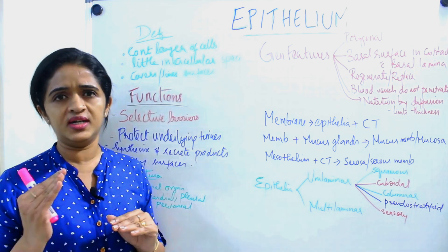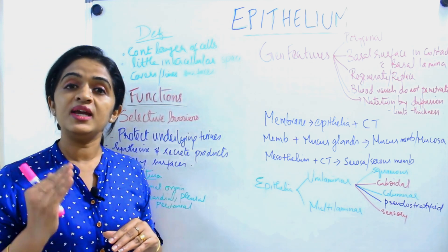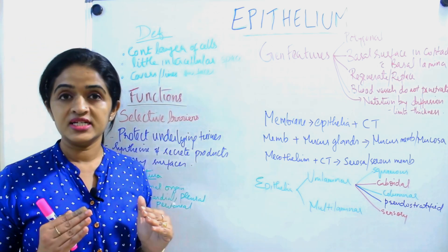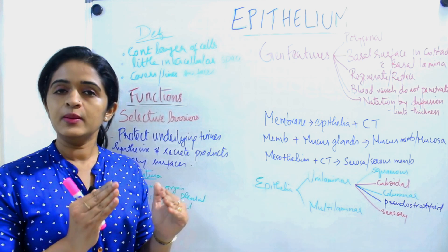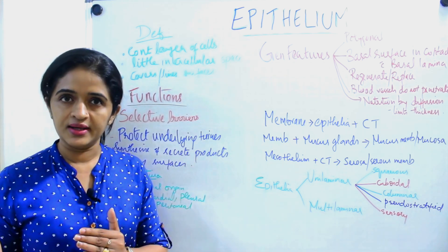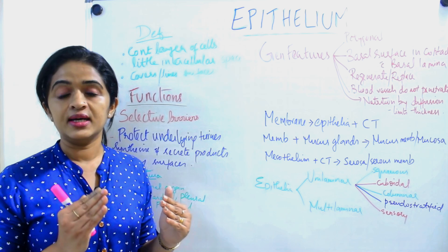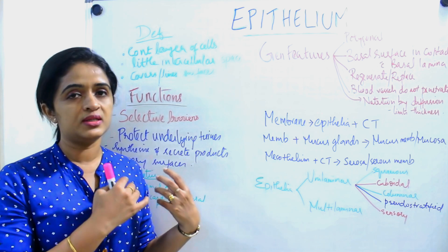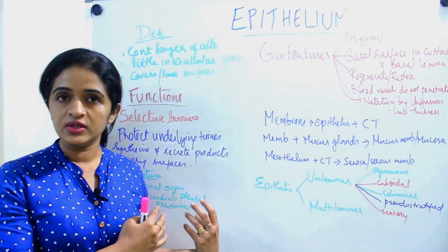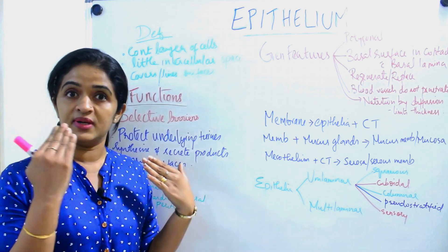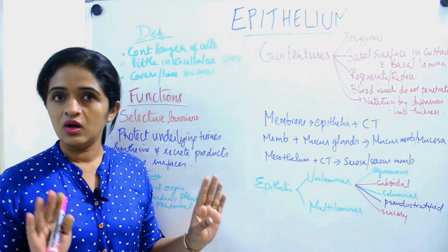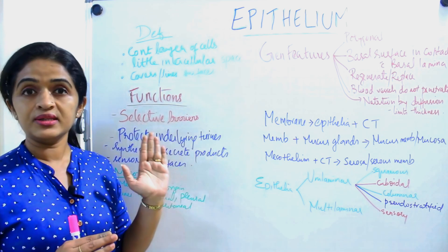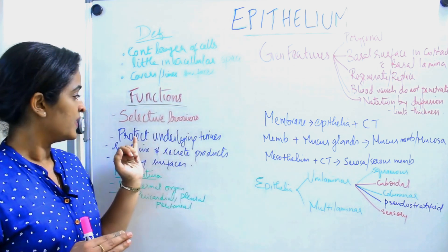Now we will talk about the functions — why you need an epithelium, or what are the main functions of epithelium. The first one is it acts as a selective barrier. Depending upon the location, different types of epithelia will act as selective barriers — at some places it will allow air to diffuse, at some places it allows water to diffuse, and sometimes it acts as mechanical protection preventing structures from entering. So it acts as a selective barrier.